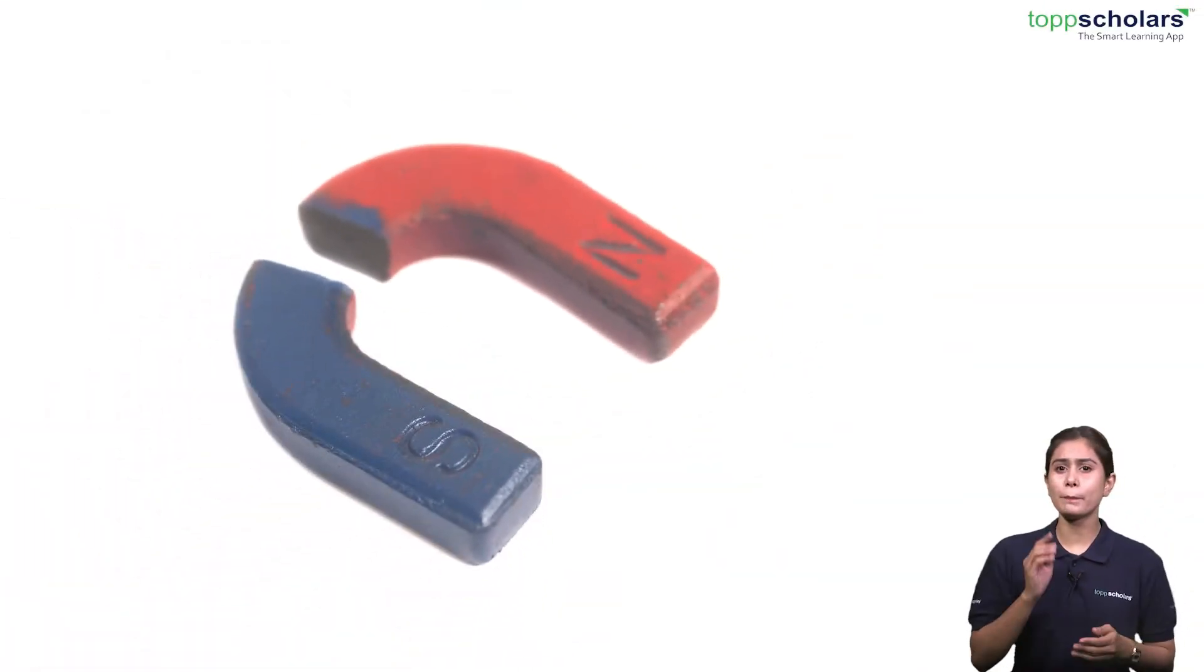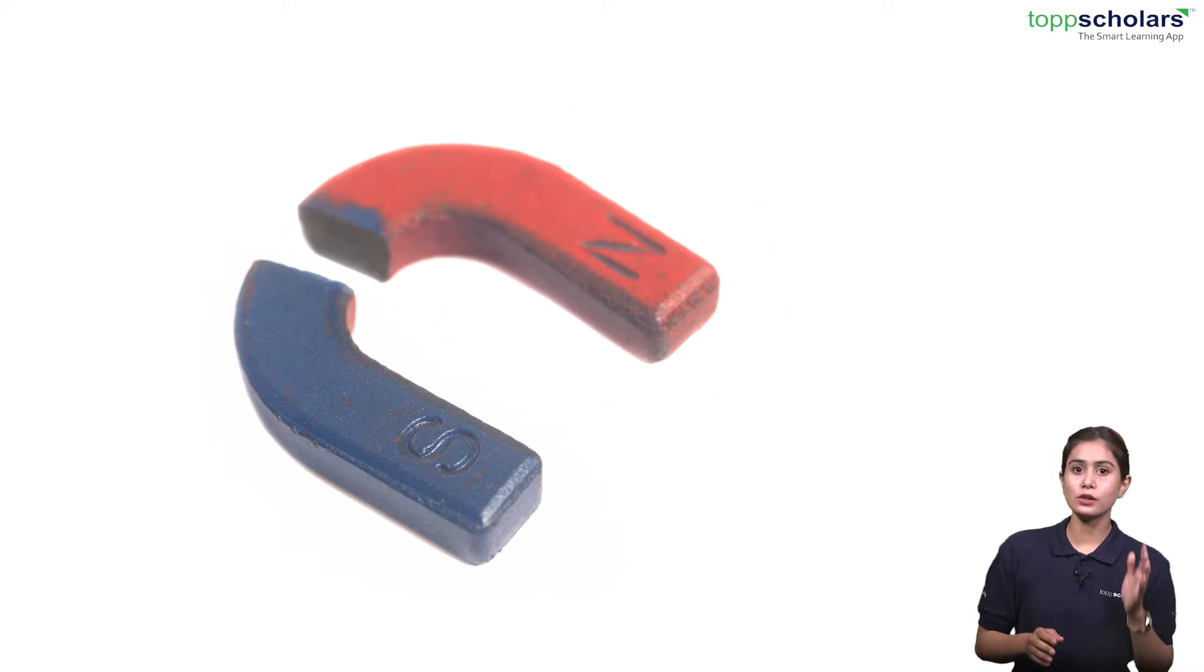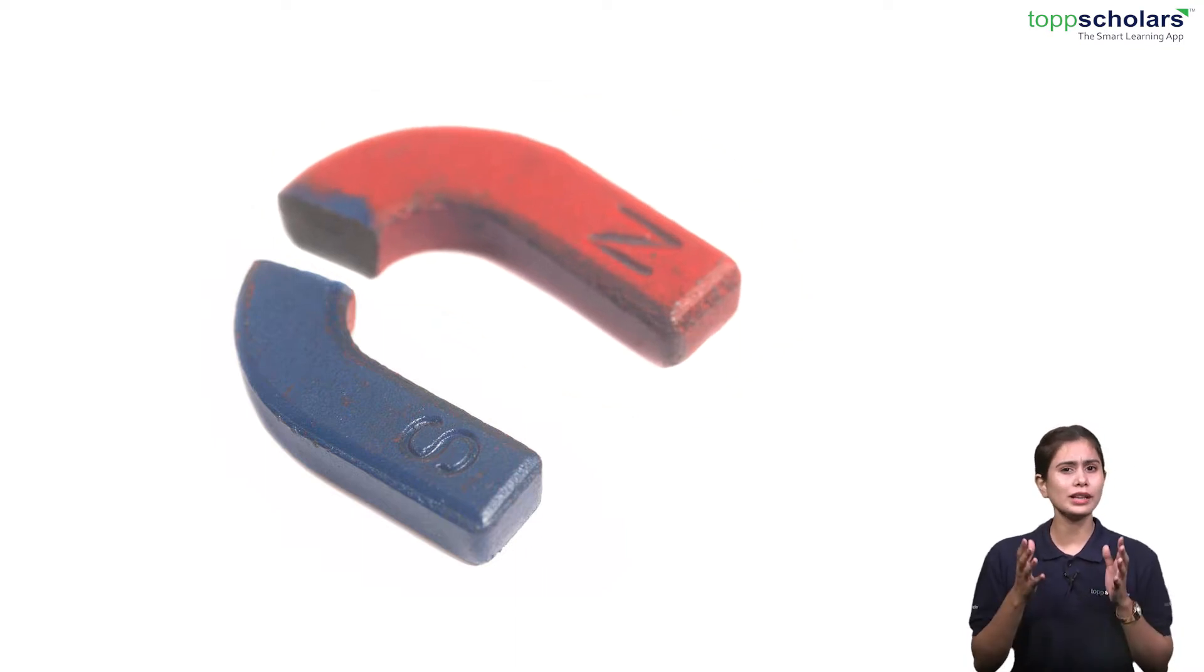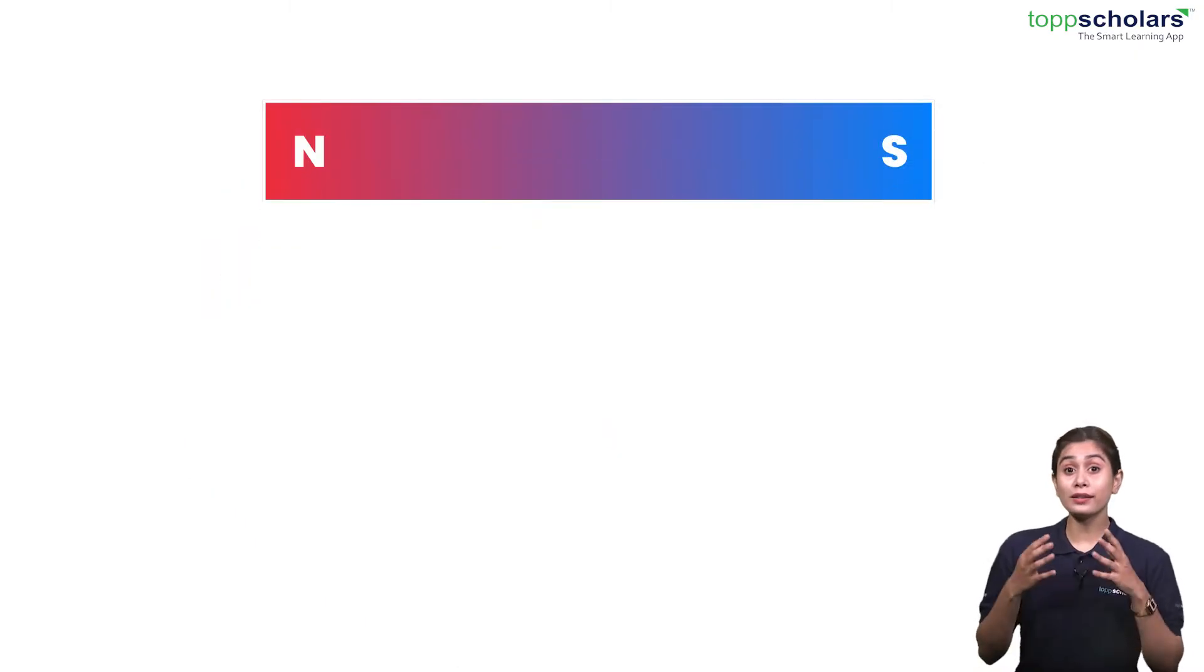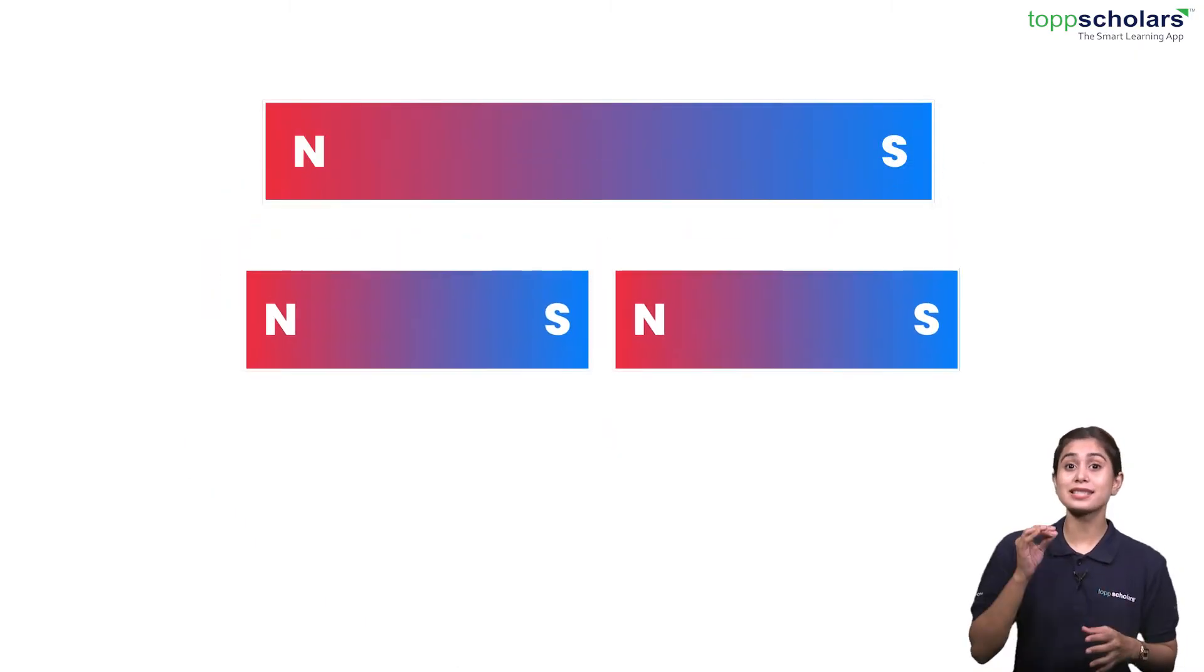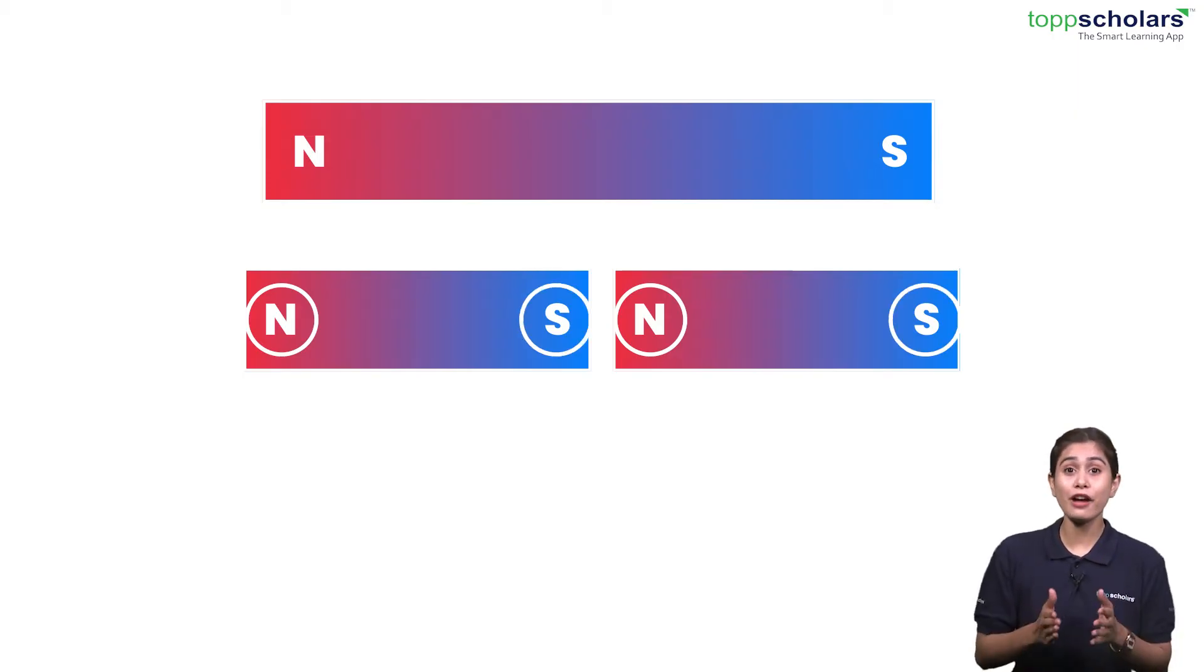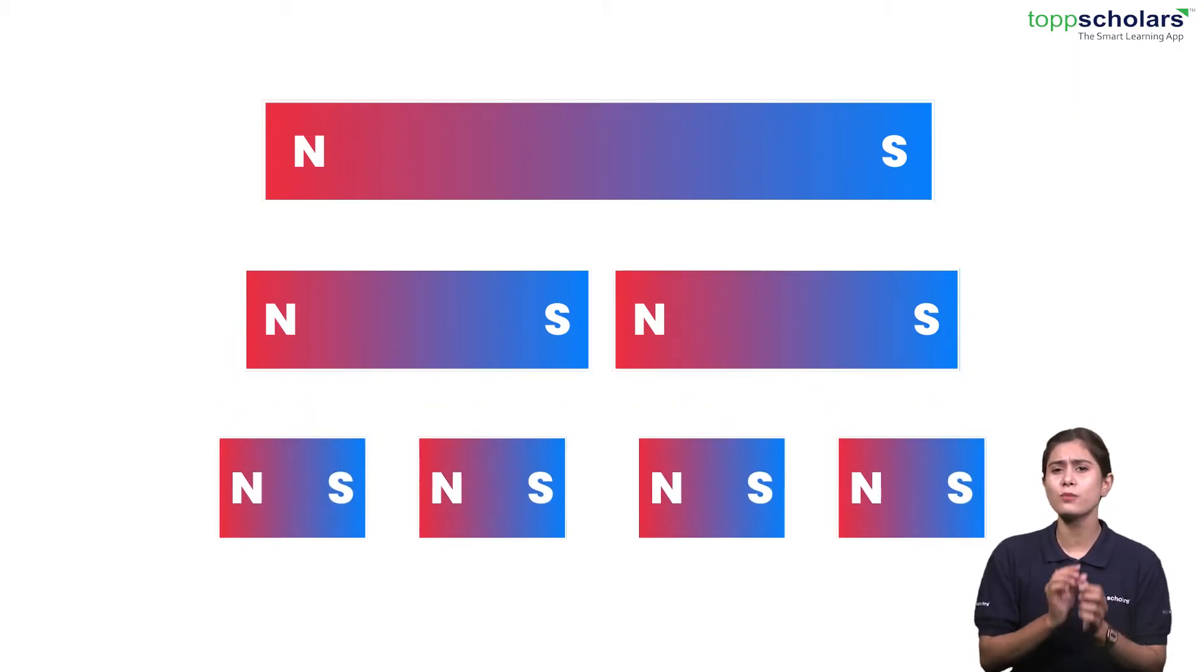What happens if you break a magnet into two? Will one half have only a north pole and the other half only a south pole? Let's find out. To our surprise, each piece still has both a north and a south pole even after the magnet is broken into smaller parts.